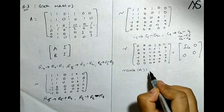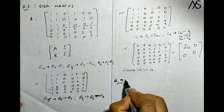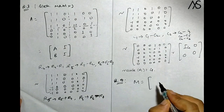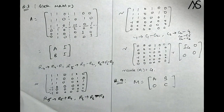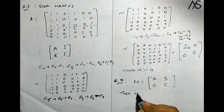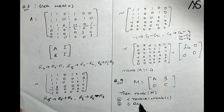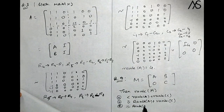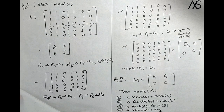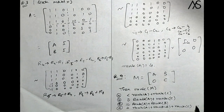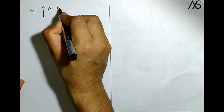Question 4: Suppose M = [A, B; 0, C] is an upper triangular block matrix. Then what is the rank of M? Options are: (a) rank(M) < rank(A) + rank(C), (b) rank(M) > rank(A) + rank(C), (c) rank(M) ≥ rank(A) + rank(B), or (d) rank(M) = rank(A) + rank(B) + rank(C). Which of the following is correct?